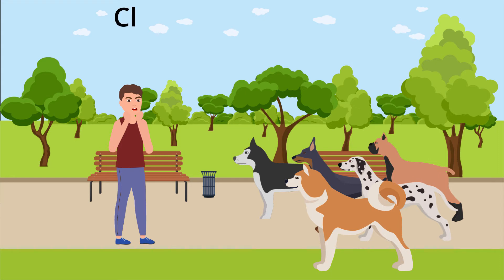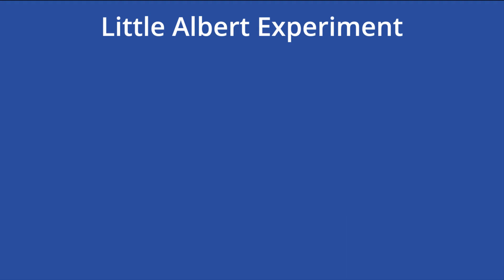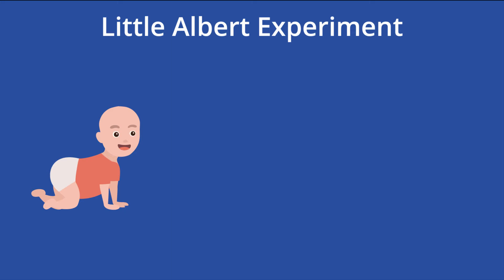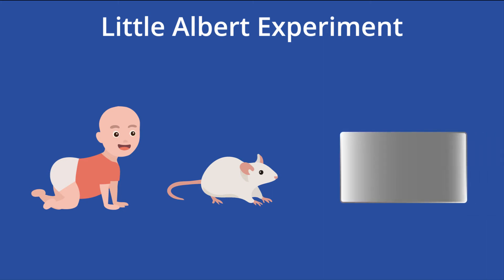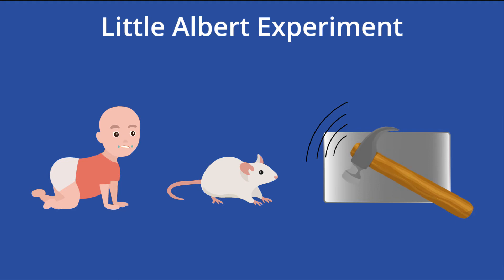A similar instance of classical conditioning took place during the Little Albert Experiment. The Little Albert Experiment was a classical conditioning experiment conducted on a little boy named Albert. Experimenters classically conditioned Albert by repeatedly pairing neutral stimuli such as rats and rabbits with feared stimuli, like loud noises. Albert developed a phobia of similarly white and fluffy stimuli.